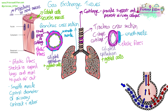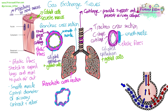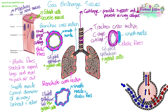A bronchiole cross-section, which is one of the smaller tubes, is more simple. The outer layer is smooth muscle with some elastic fibres embedded, and then we have ciliated epithelium lining the airway, but this time there are very few goblet cells.